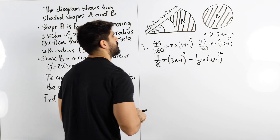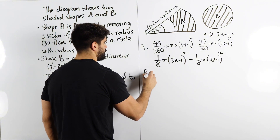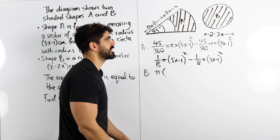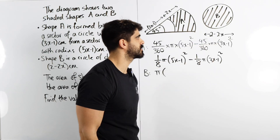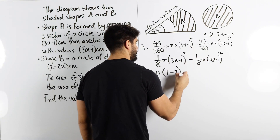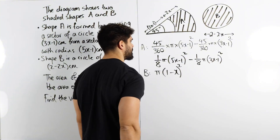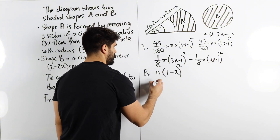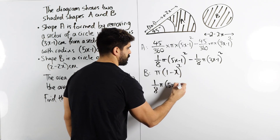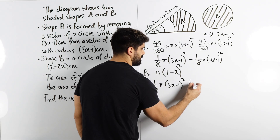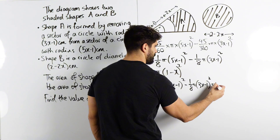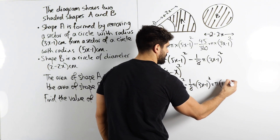Now let's talk about shape B. That's just pi r squared. We have pi times the radius — we have to be careful, they gave us the diameter, so we need to halve that to get the radius. Half of (2 minus 2x) is (1 minus x). So area B equals pi times (1 minus x) squared. Setting these equal: one eighth pi (5x minus 1) squared minus one eighth pi (3x minus 1) squared equals pi times (1 minus x) squared.